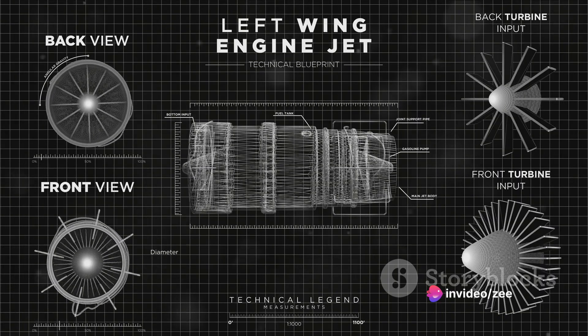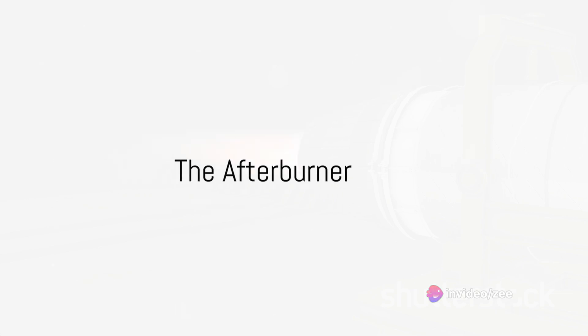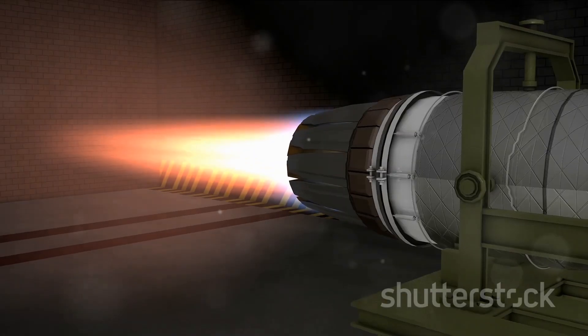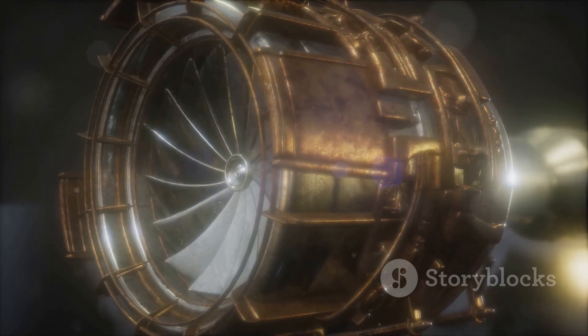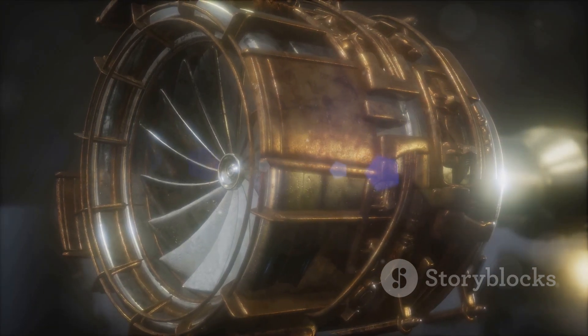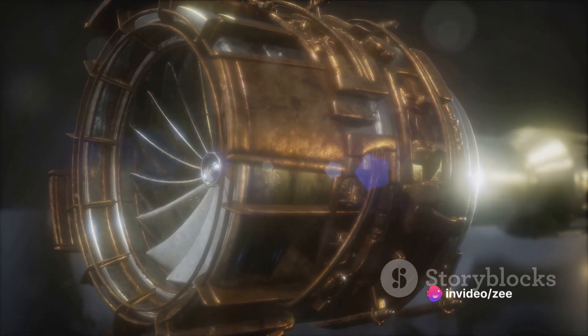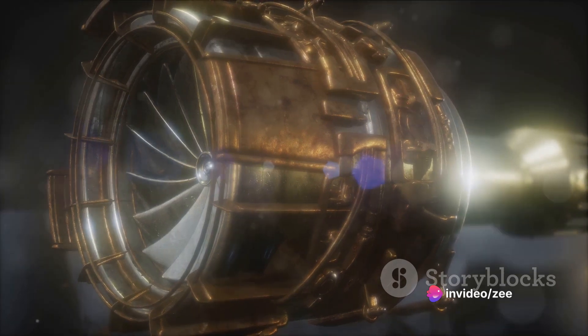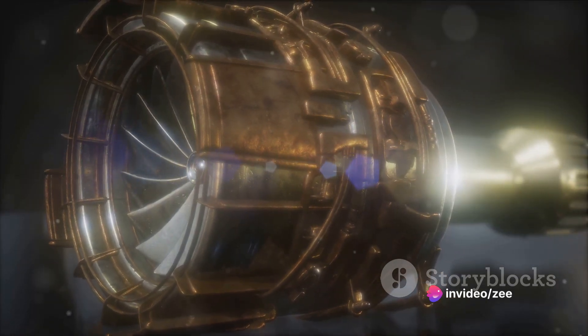This type of engine is known as a low-bypass engine. Some jet engines also feature an afterburner — an additional combustion chamber located downstream of the turbine. It injects extra fuel into the exhaust gases to provide a temporary boost in thrust, typically used during takeoff or high-speed maneuvers.